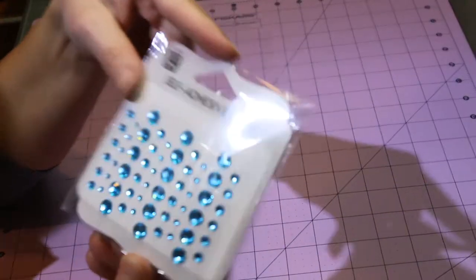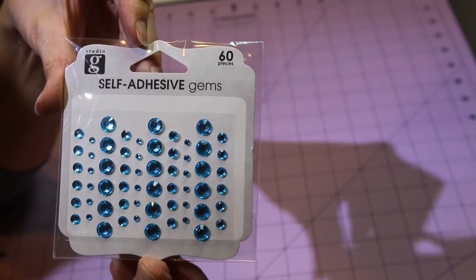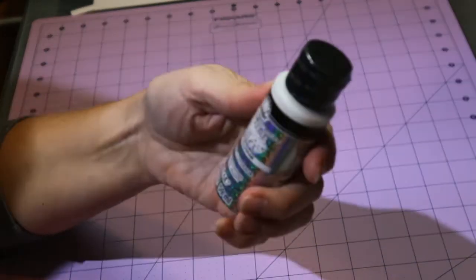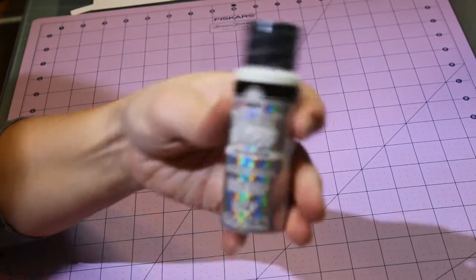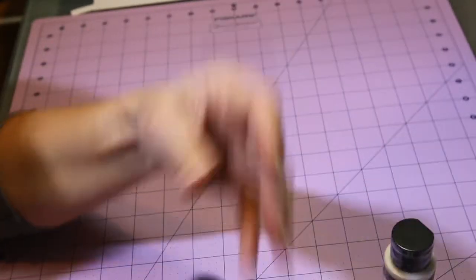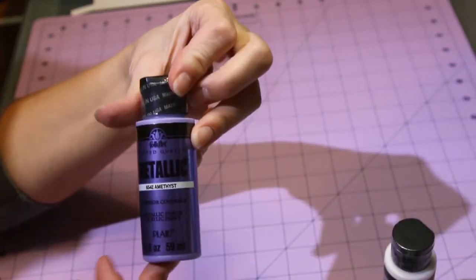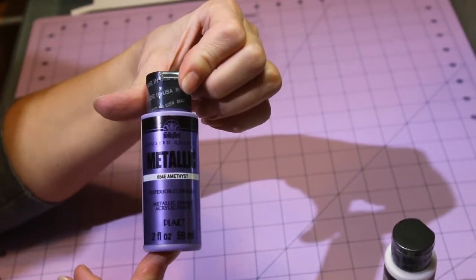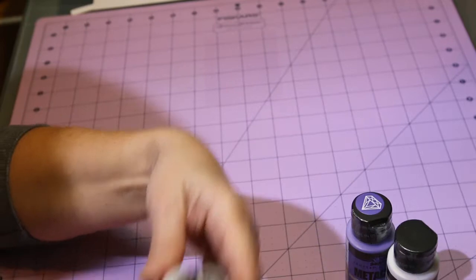I got these self-adhesive gems. I found a couple bottles of paint that I liked. There's this extreme glitter hologram. There's this metallic amethyst. And metallic pearl white.